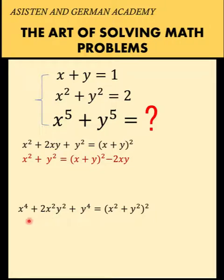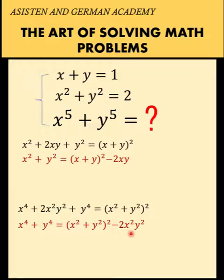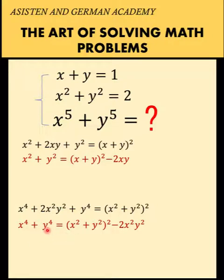Following the square of a binomial formula, we arrive at this expression on the left, and solving for x to the fourth plus y to the fourth, we have this expression, which we arrive at by copying the right side minus the middle term. There's no problem when the exponents are even.